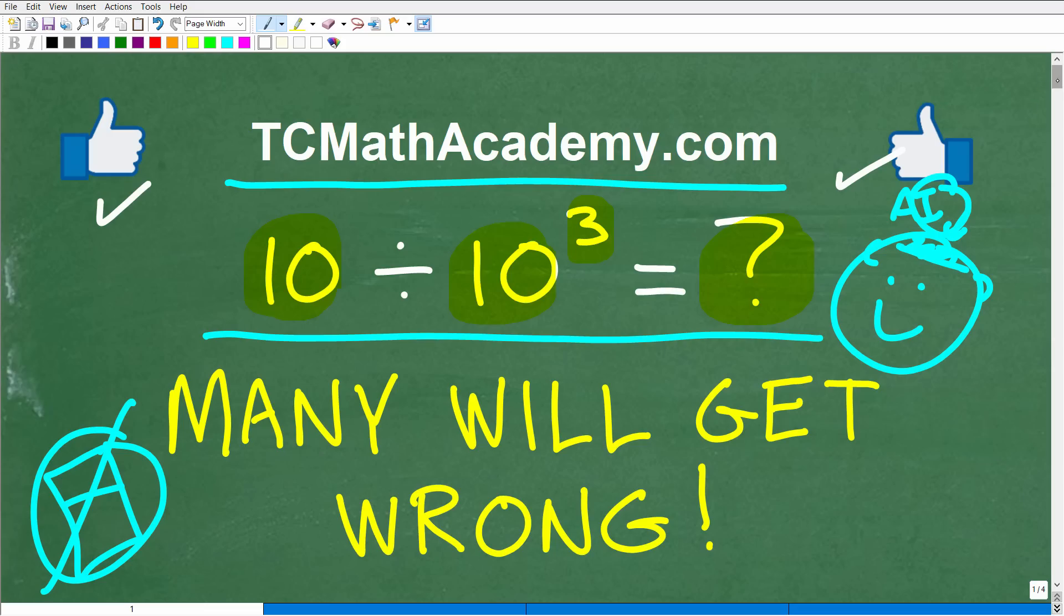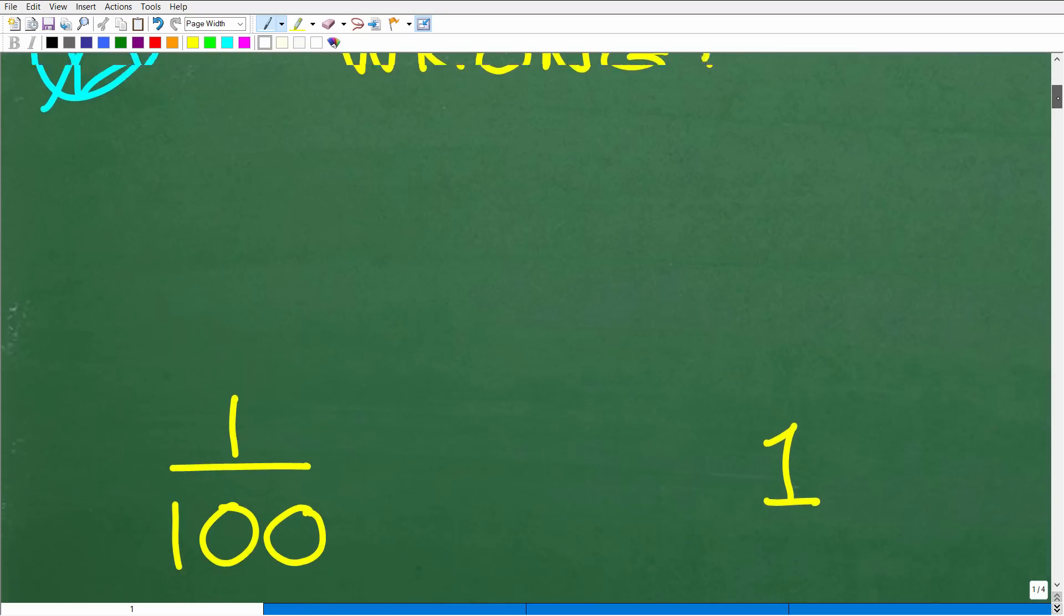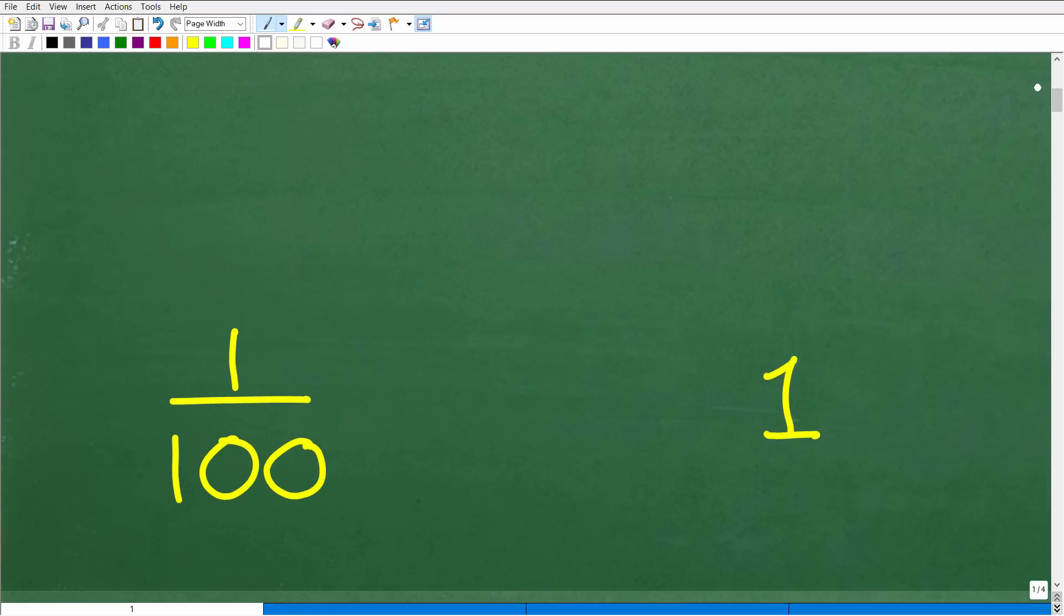But let's go ahead and take a look at the answer right now. So 10 divided by 10 cubed. What is the correct answer? The correct answer is going to be one of these answers. So which one did you pick? Did you pick this answer? Well, that is the wrong answer.